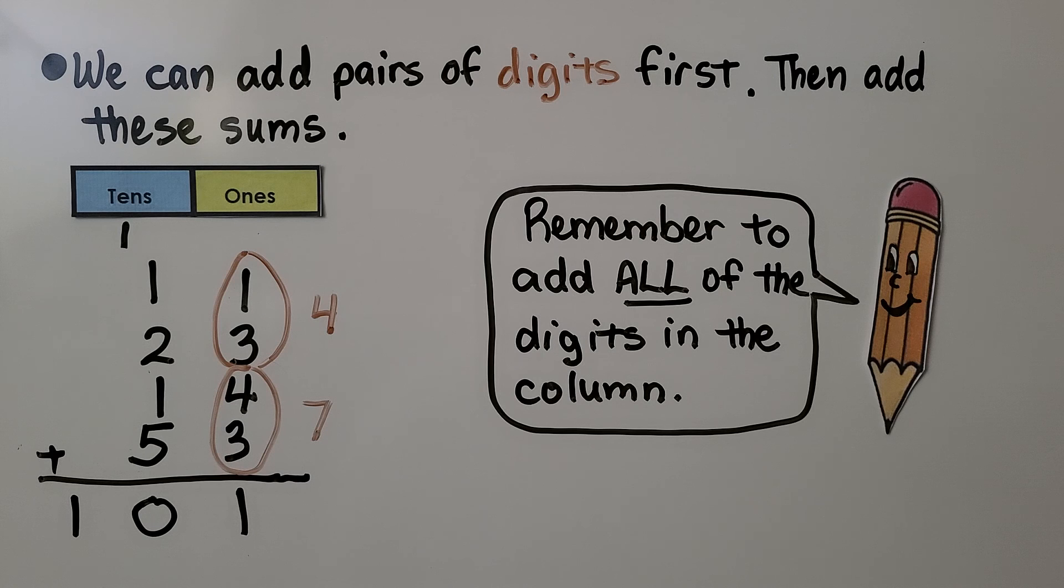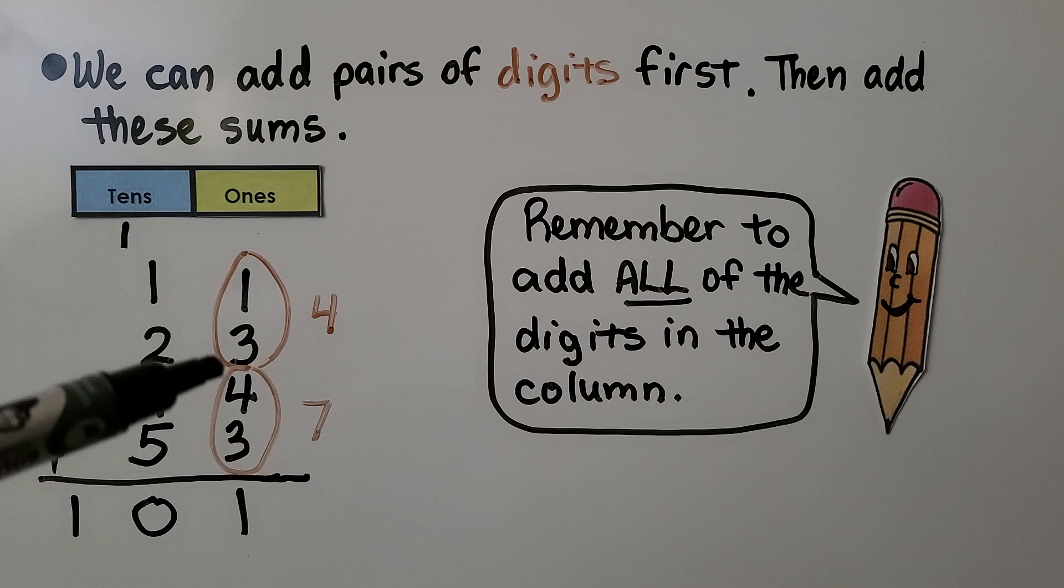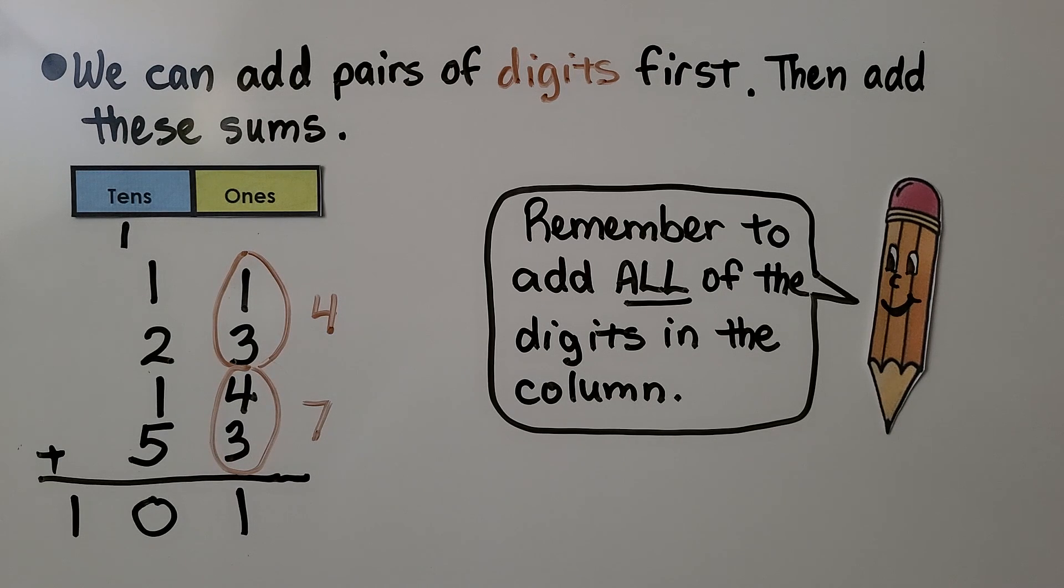We have to remember to add all of the digits in the column. If we add the digits and forget one, we're going to have the wrong sum.